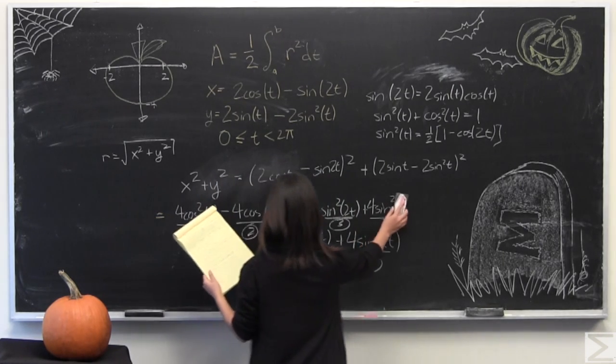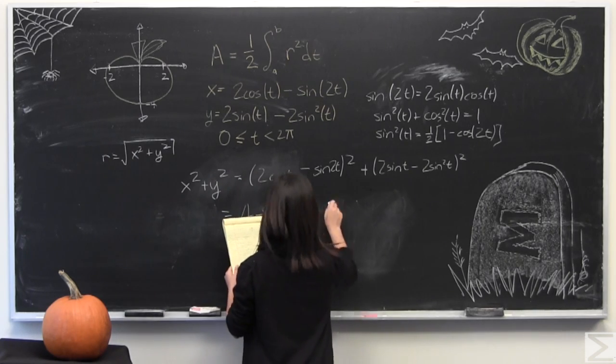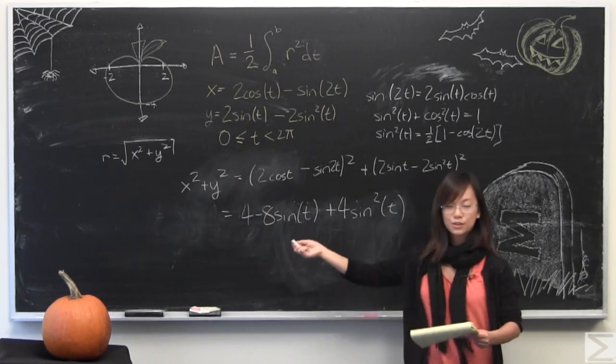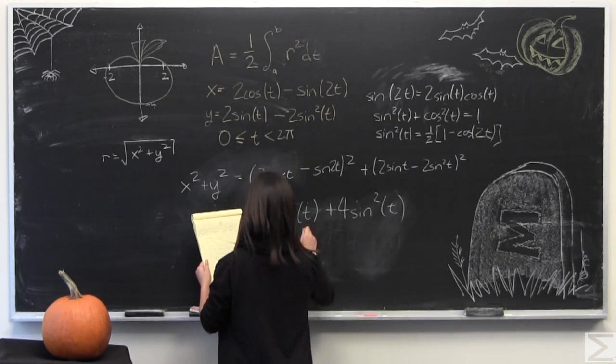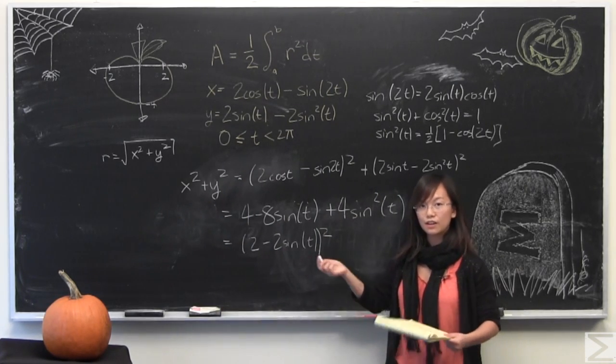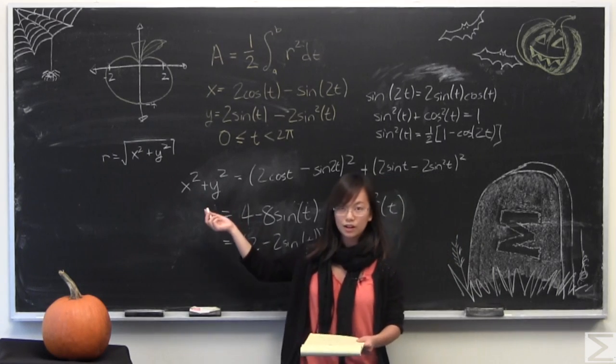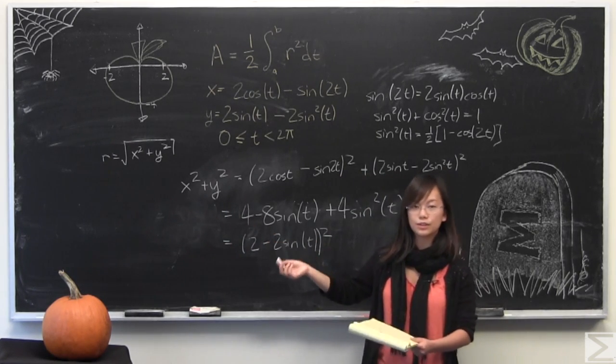I'm going to rewrite it and eventually your terms are just going to group together to be this. And this is also equal to sine of t and all that squared. If you take the square root it will give you r because this is x squared plus y squared and r is equal to the square root of that.